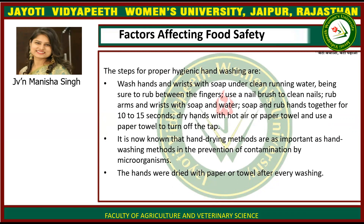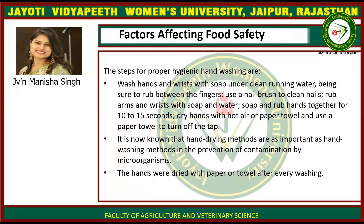When washing hands, be sure to rub between the fingers, use a nail brush to clean the nails, rub arms with soap and water, and rub hands together for 10 to 15 seconds. Dry hands with hot air or a paper towel, and use a paper towel to turn off the tap. It is now known that hand drying methods are as important as hand washing methods in the prevention of contamination by microorganisms.